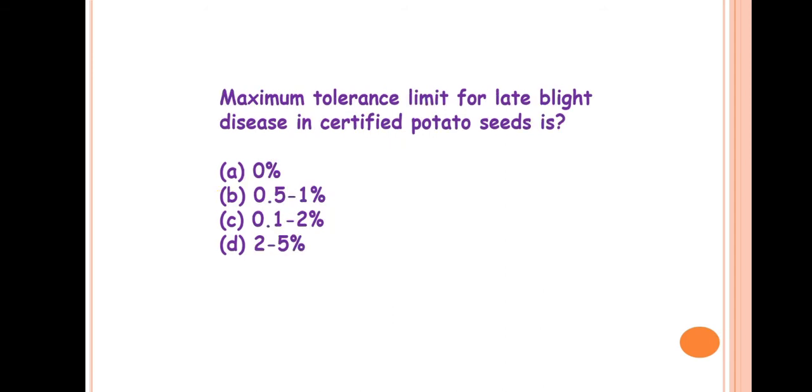Next question is: maximum tolerance limit for late blight disease in certified potato seed is? So the answer is 0%. Seed certification is done to provide farmers with disease-free seeds and with high germination quality. For the late blight pathogen, the maximum limit of tolerance is 0% because this is a very destructive disease. If it is present in seed, then it will systemically develop in the growing seedling and it also spreads to other plants of the field. That's why the tolerance limit is 0%.